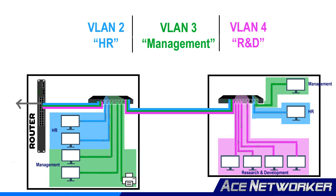This becomes extremely beneficial for multiple reasons. You're limiting broadcast traffic, which we'll cover in other videos. You're also improving security by not allowing somebody from one group to access resources and devices in another group unless you specifically grant that access. A physical port on the switch connected to the HR person's computer is configured in the HR VLAN — whatever VLAN number you choose for HR.